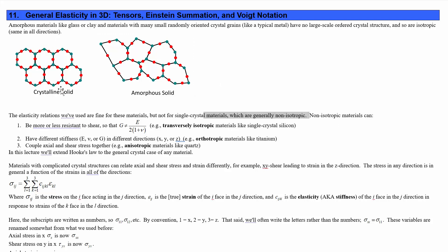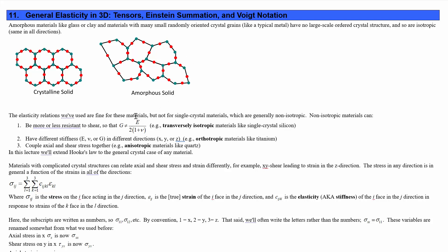The relations we've given so far are fine for materials that are basically amorphous or have no large-scale crystal periodicity, but for single crystal materials especially, we're going to run into trouble. These materials are generally not isotropic. Non-isotropic materials can be more or less resistant to shear, so the shear modulus doesn't actually equal E over 2 times (1 plus nu). For example, a transversely isotropic material like single crystal silicon — in any one direction it's the same as any other, but it still has a different shear modulus than you'd expect.